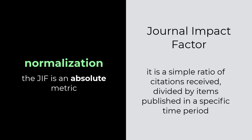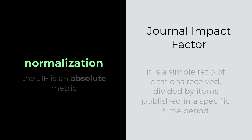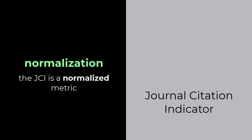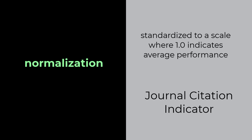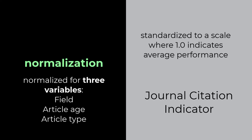The JIF is a simple ratio of citations received divided by items published in a specified time period. Whereas the JCI is a normalized metric that is standardized to a scale where 1.0 indicates average performance. It is normalized to correct for three variables: field, article age, and article type.